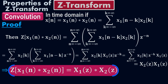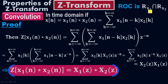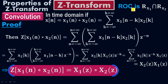But what will be the region of convergence? The region of convergence for this property will be the intersection of R(X1) and R(X2) — whatever region of convergence we have for the X1 signal and the X2 signal, we take their intersection. The intersection of those two regions of convergence will be the region of convergence for this convolution property.